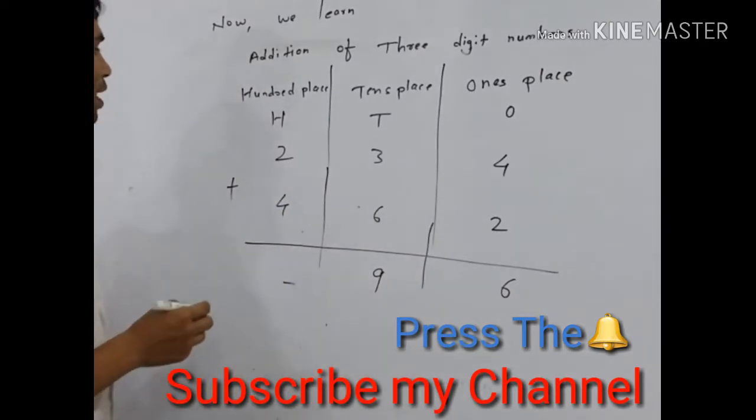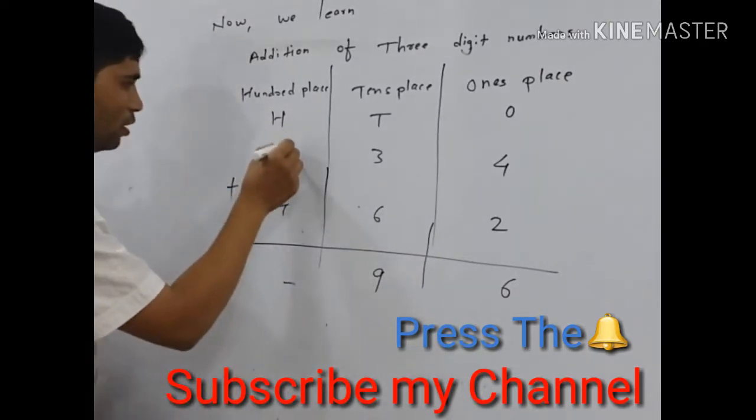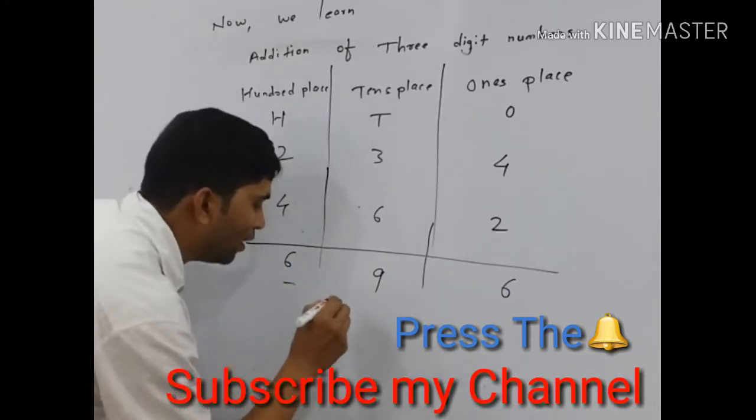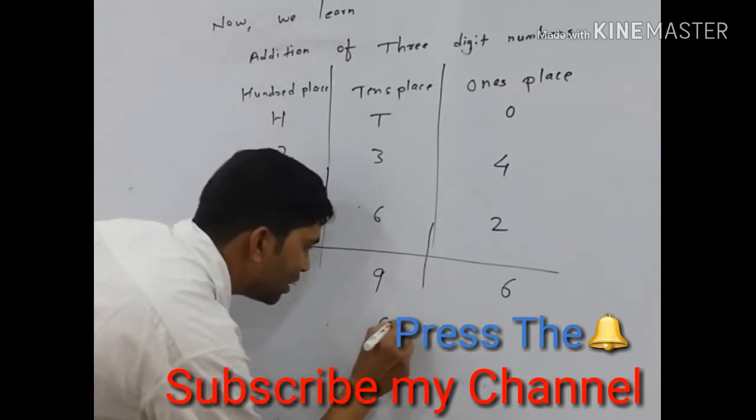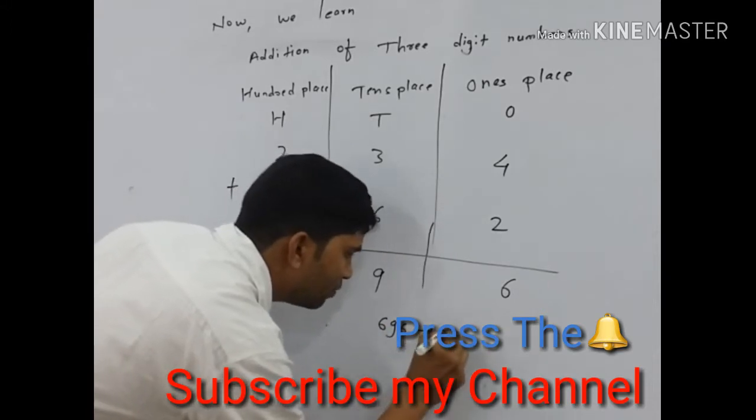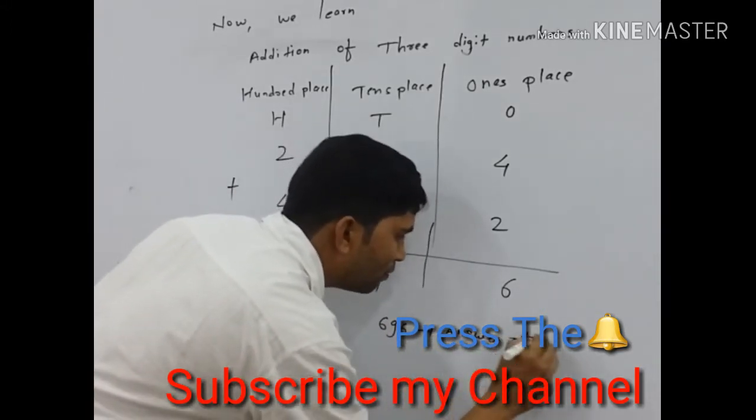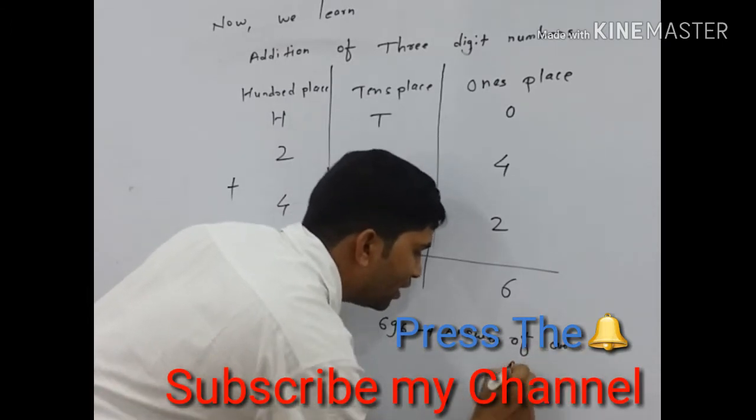And last, hundredth place number 2 plus 4, we get 6. In final we get 6, 9, 6 is the answer of our addition.